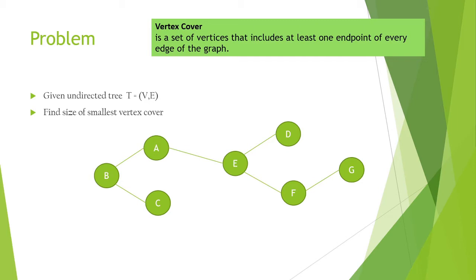The example graph is given here, and we'll use this example graph once we define our solution. We'll run through this problem to see that we arrive at the right answer, and the right answer here — the smallest vertex cover — has a size of 3.